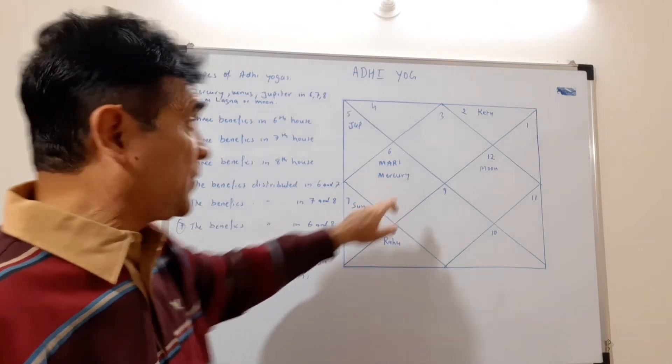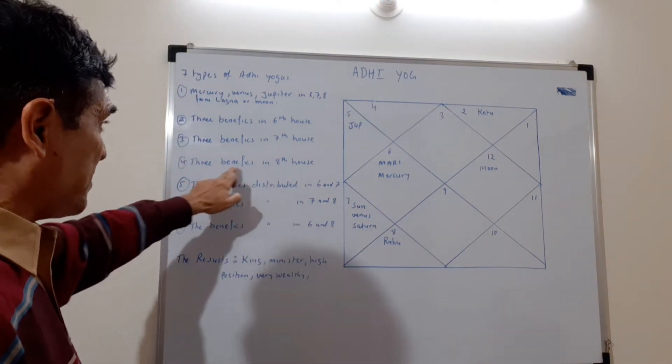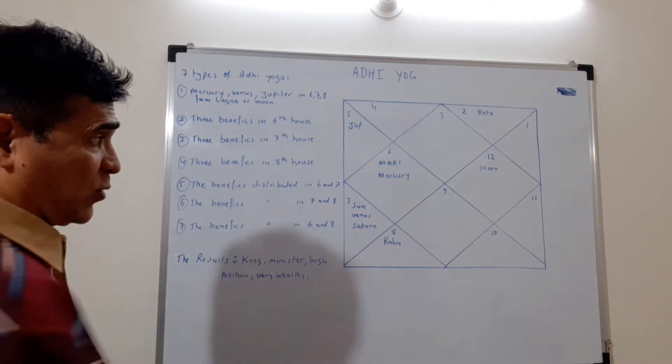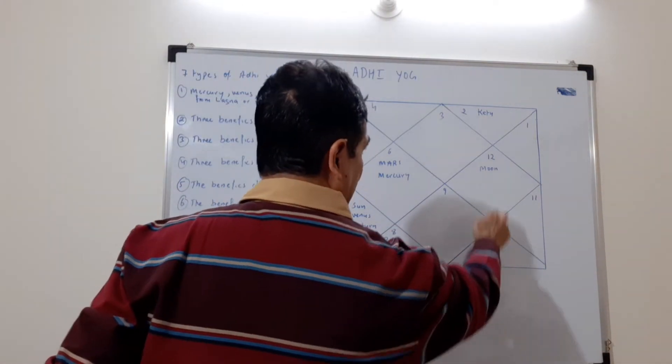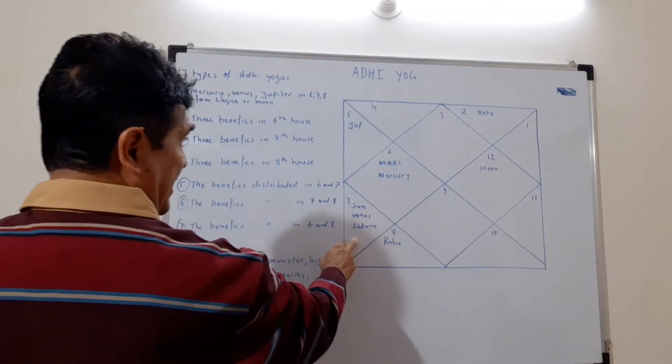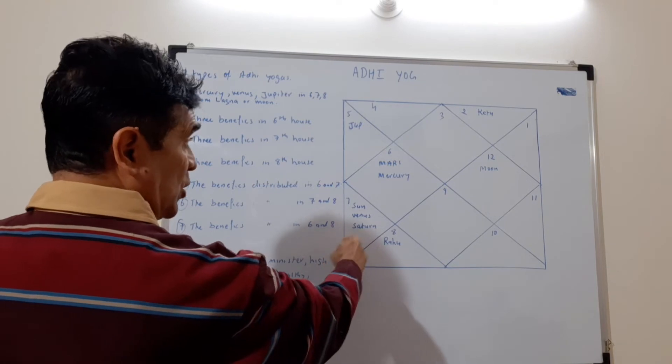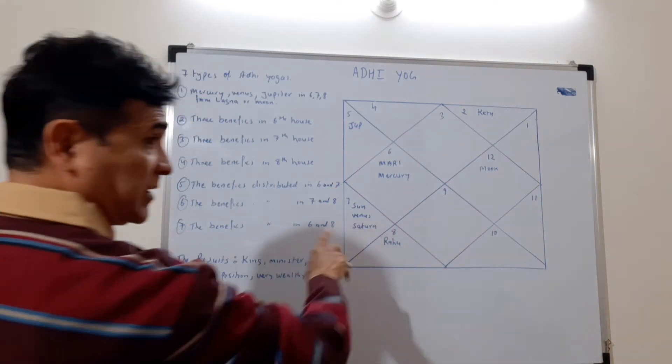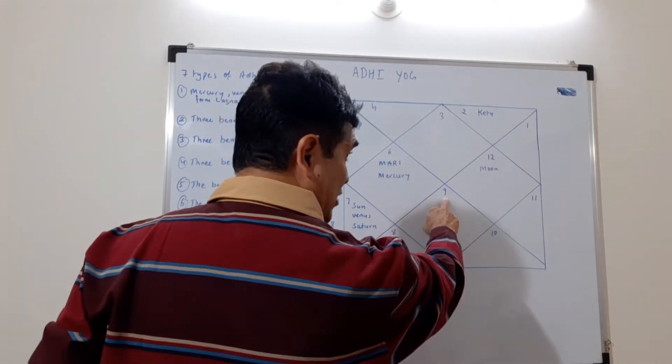Now this is the eighth house and from Moon this is the eighth house. Don't go by the number - the number is the sign. Like for example, number 9 over here is Sagittarius, but the house is seventh house.